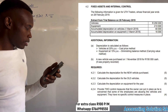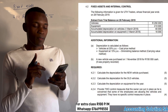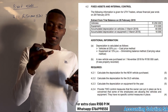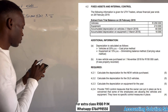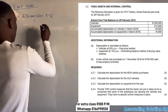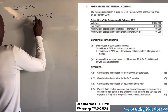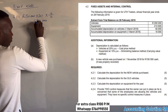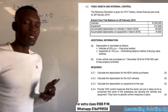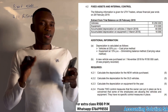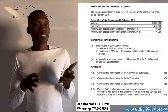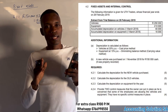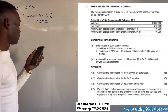Let's count those months. It was purchased on 1 November and our year ends on 28 February, so: November, December, January, February — four months. The calculation gives us a depreciation amount of R10,000. Whenever any asset is bought during the year, make sure you count the months to get the correct depreciation answer.